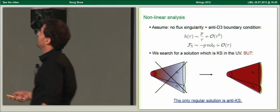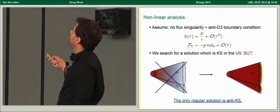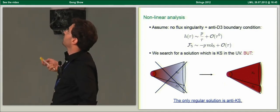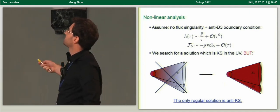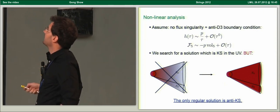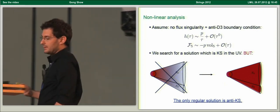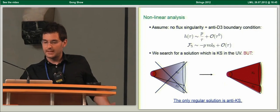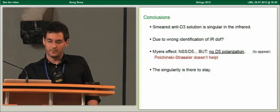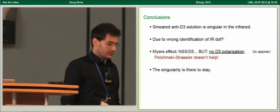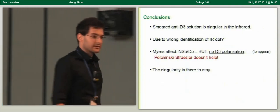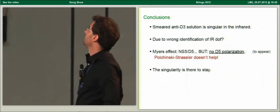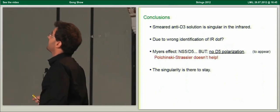It is clear that for any anti-D3 solution, we should drop the assumption that there is no flux singularity, and this flux singularity is not an artifact of perturbation theory. The conclusion is that the smeared fully back-reacted anti-D3 solution is singular in the infrared.